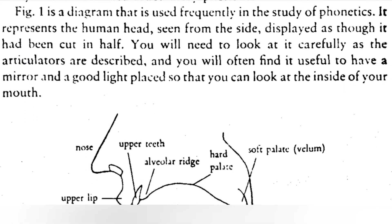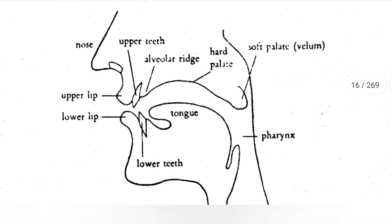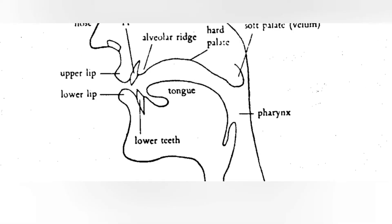Figure one is a diagram that is used frequently in the study of phonetics. It represents the human head seen from the side, as though it had been cut in half. You will need to look at it carefully as the articulators are described, and you will often find it useful to have a mirror and a good light placed so that you can look at the inside of your mouth.